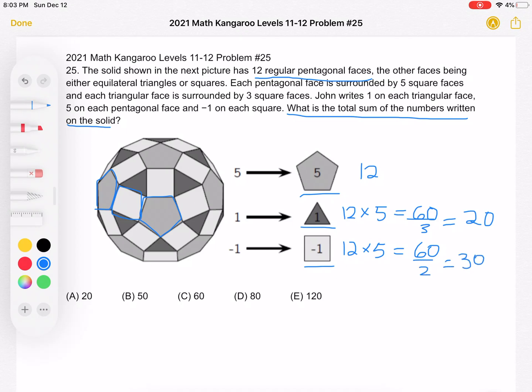Now, to find the total sum, we're going to have 5 written on each pentagon, 12 pentagons, plus 1 written on each triangle, we have 20 triangles, plus negative 1 written on each square, and we have 30 squares.